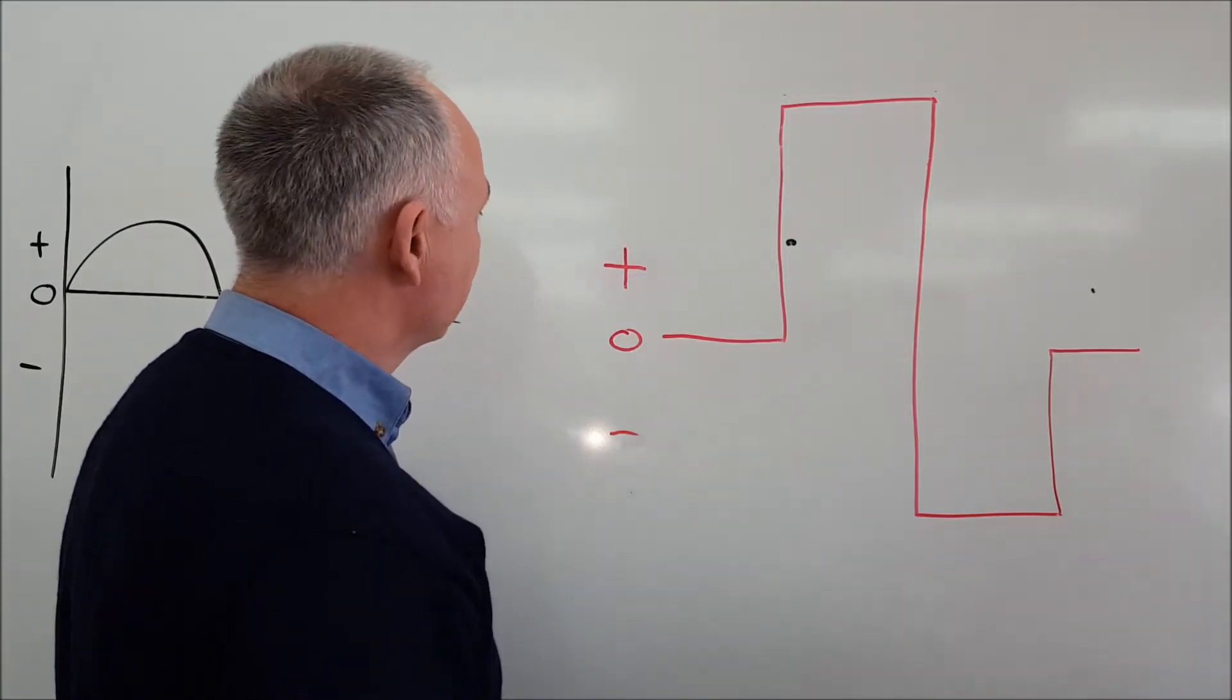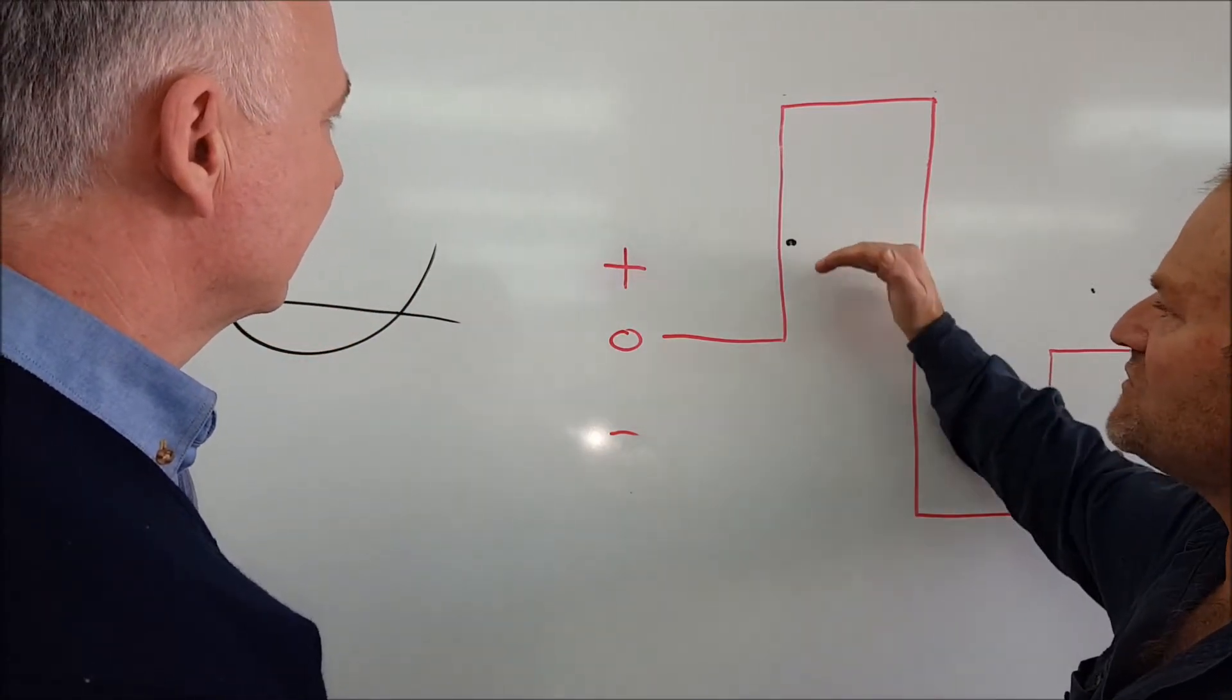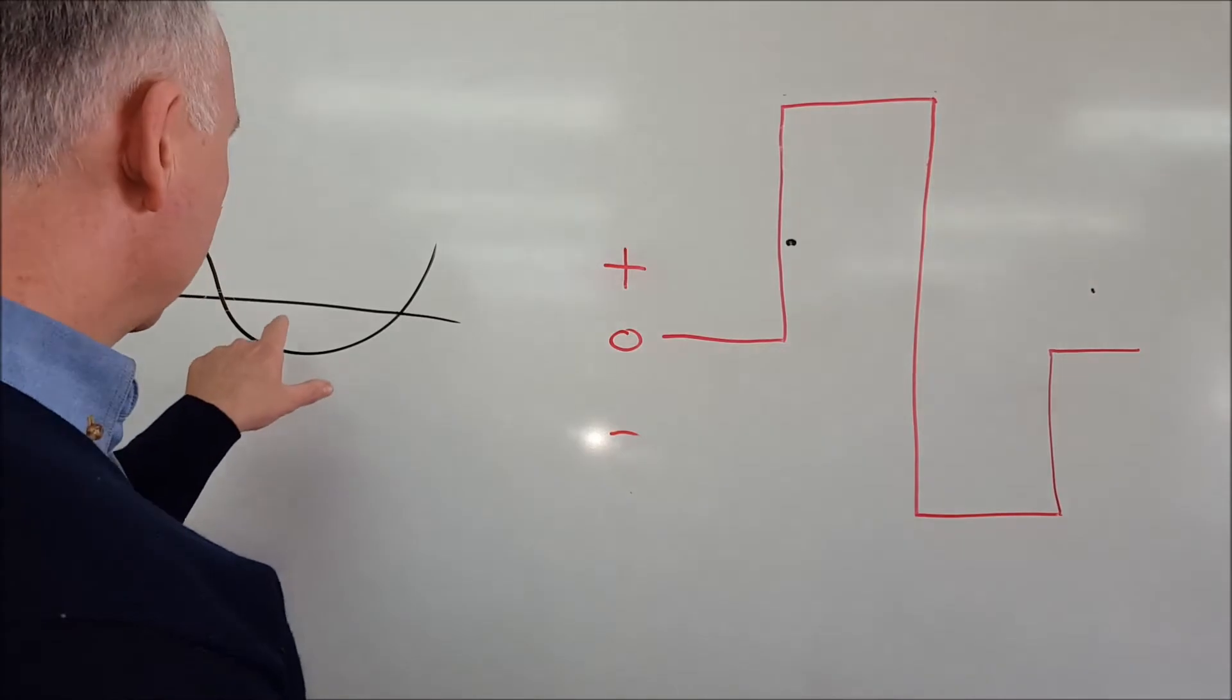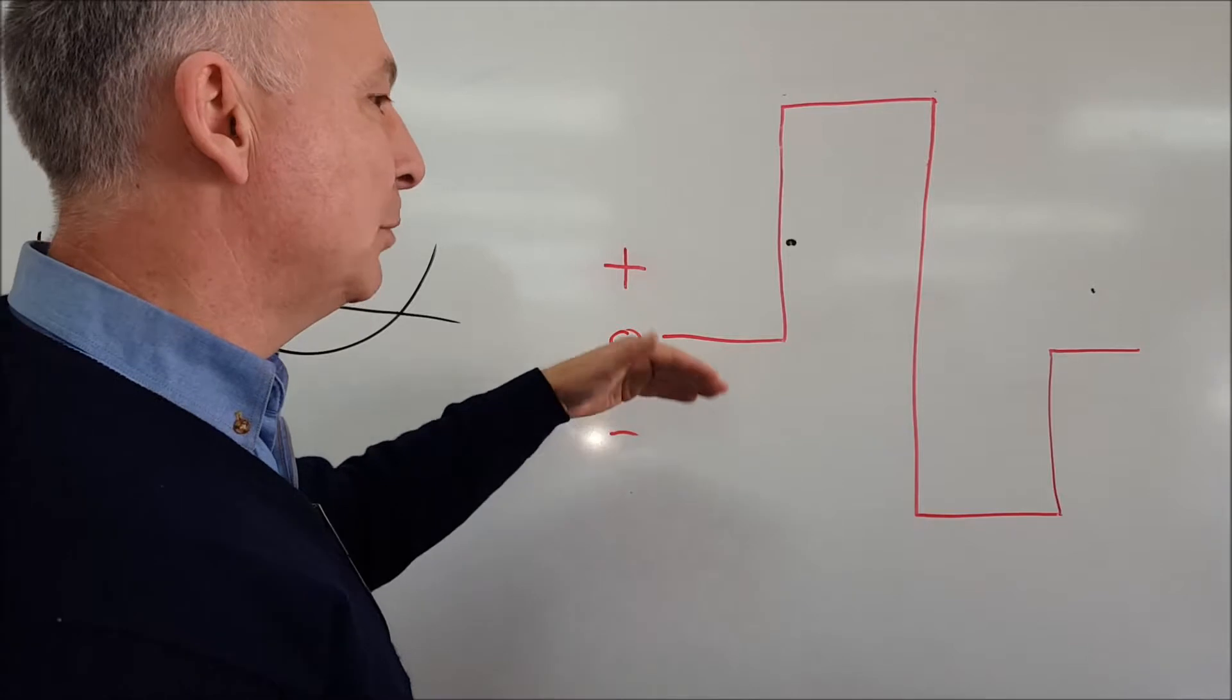And like you were saying about transformer rectifiers - they don't all come out standard with this, do they? No, traditionally they would have a standard sine wave. More modern ones would have square wave, and then more modern ones again, you have the ability to manipulate that square wave.